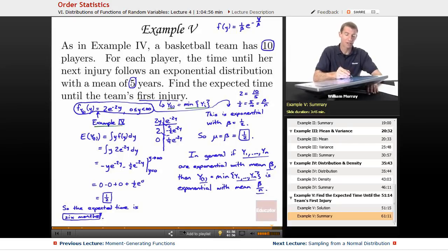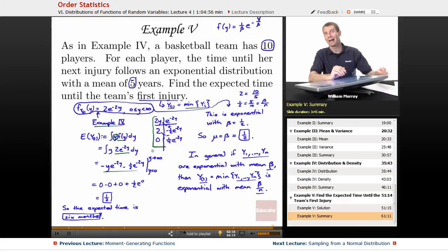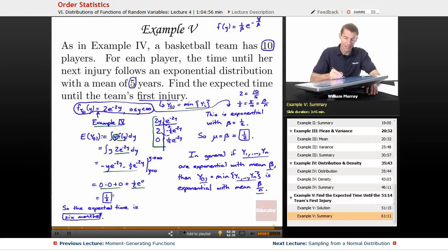Now, the long way to find the expected value of that is to use the definition of expected value. The definition says you integrate Y times the density function, and so that's what I did there. I dropped in the density function and I did the integral using integration by parts. If that tabular integration was unfamiliar to you, I cover that in my Calculus 2 lectures here on educator.com, and you can find a section on integration by parts. When I plugged in the infinity, they all dropped out. When I plugged in zero, I got exactly one half, and so my expected time is one half a year, which I translated into six months. That was the long way.